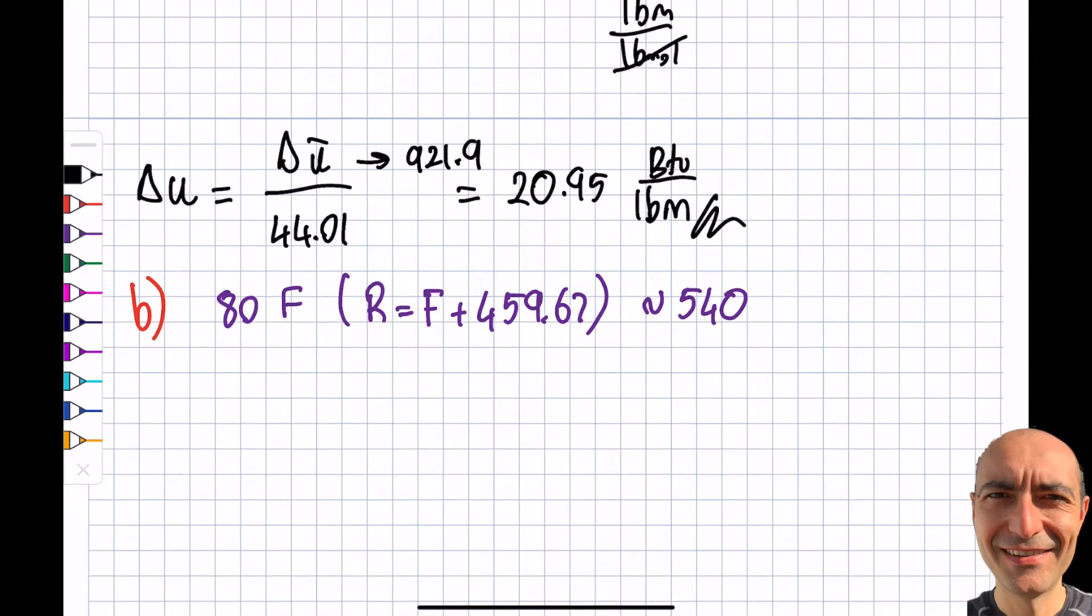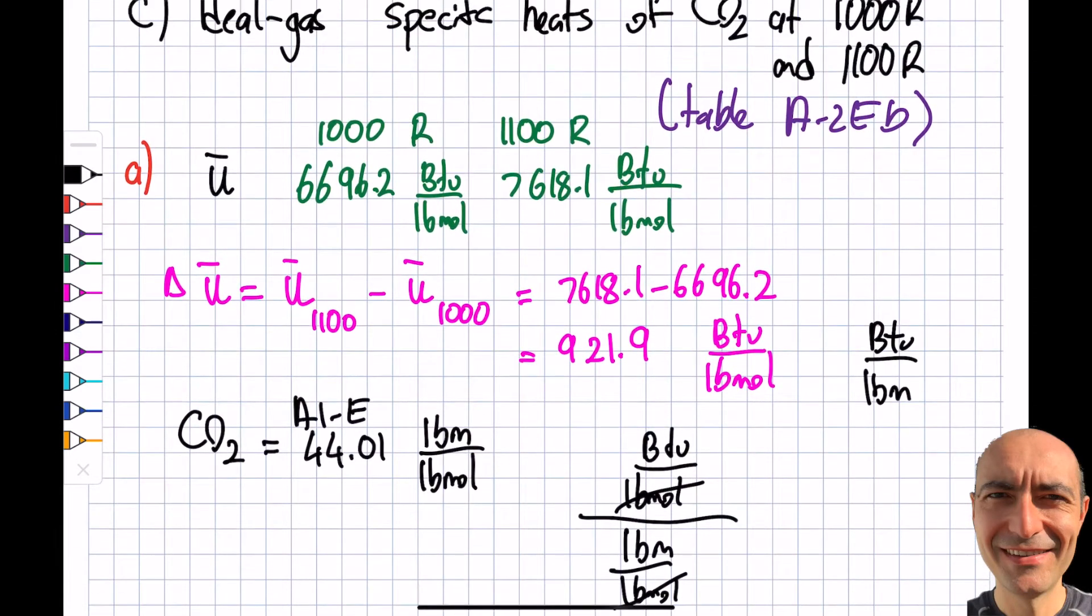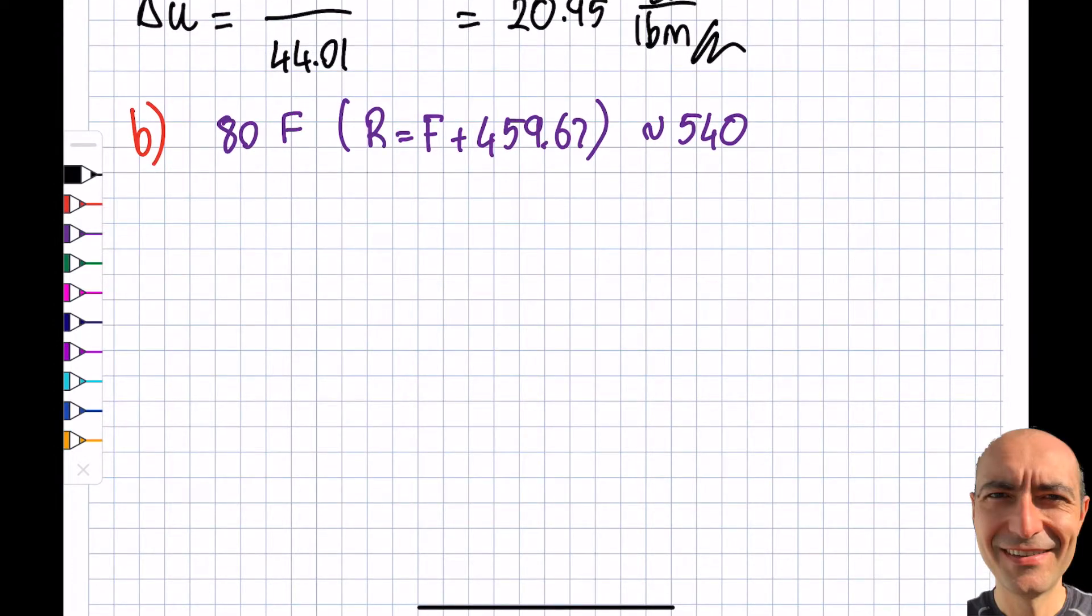The next question I have is: I have cv and cp - which one am I going to use? I go back to my theory. Delta u is related to cv constant volume. If it is related to constant pressure, when I multiply that by the temperature difference, I'm going to get h enthalpy difference. So I read my cv value and it says it is 0.158 BTU per pound mass times Rankine. I am aware as I increase the temperature this number should go up, so I'm going to undershoot 20.95, but how much - that is the question.